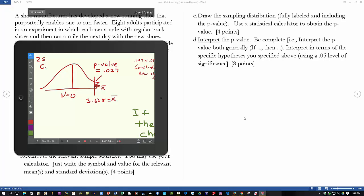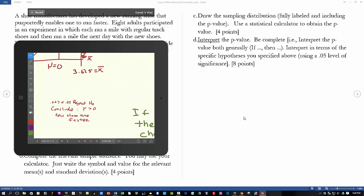For part D, we want to get an if-then statement in terms of the hypotheses. We reject H0 if it's less than 0.05. Therefore, we reject H0 and conclude that mu is greater than zero. Now you could put there new shoes are faster, but I have to say that's not necessarily true.